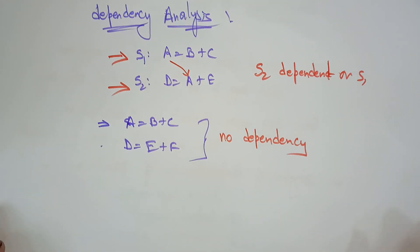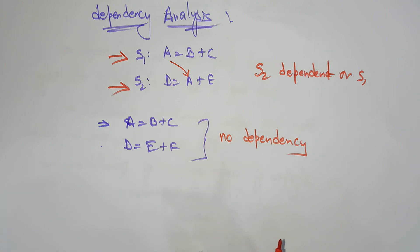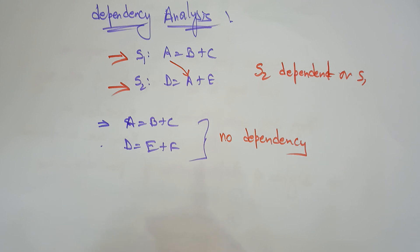This is what dependency analysis is about. In the next video, we will discuss the three different types of dependencies of parallelism: data dependency, control dependency, and resource dependency. I will explain data dependency first in the next video. Thank you.